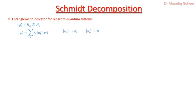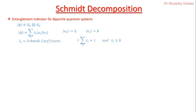subsystems A and B respectively, and lambda_i is the Schmidt coefficient, which depends on two conditions: lambda_i is always positive, and the sum of the Schmidt coefficients is always equal to one.